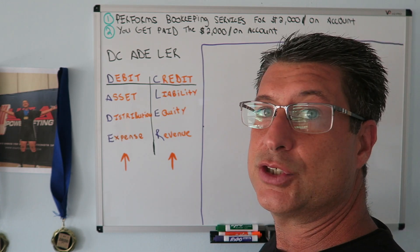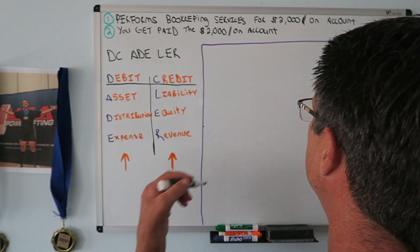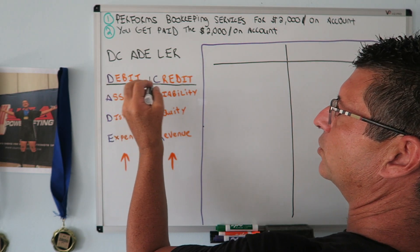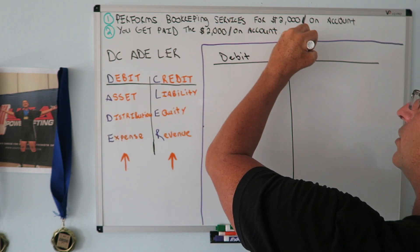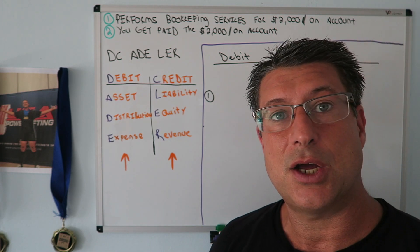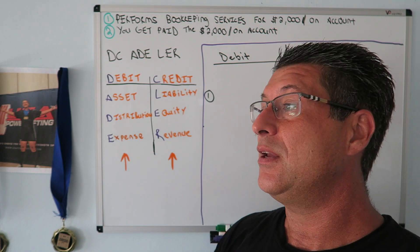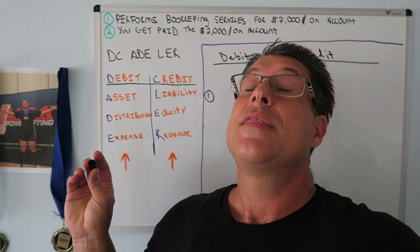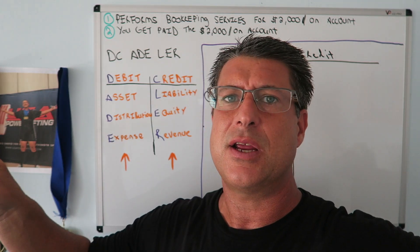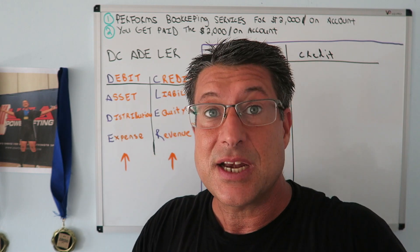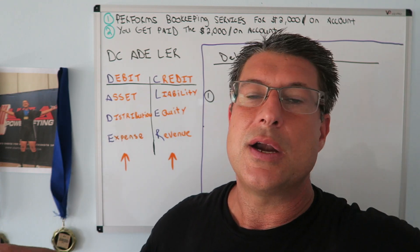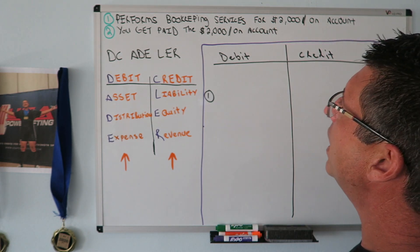When I have a journal entry transaction to do, I make a line in the middle of my paper — debit on the left, credit on the right. Always. First transaction: you perform bookkeeping services for two thousand dollars. If you perform work that's ordinary and necessary in your business, that's going to be revenue — that's income. You're getting paid for something you do daily, so that's a revenue of two thousand dollars.